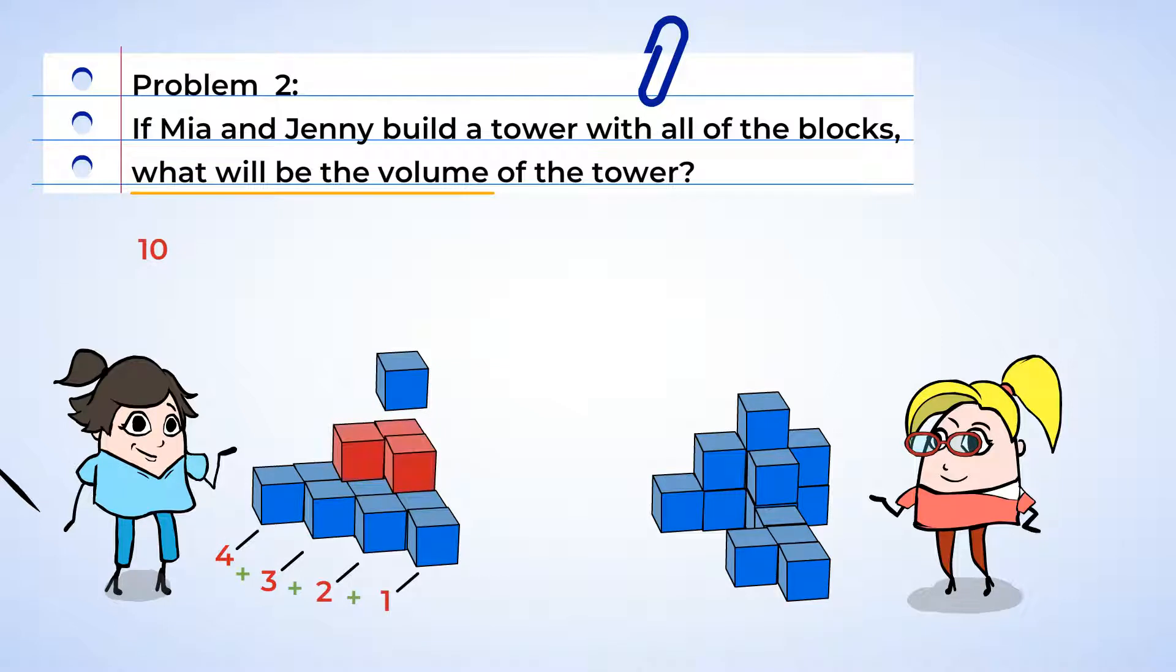So the first layer has 10 blocks, and the next layer has three blocks, and the top layer has only one block. So this means that there are a total of 14 blocks. Mia's structure has a volume of 14 cubic inches.